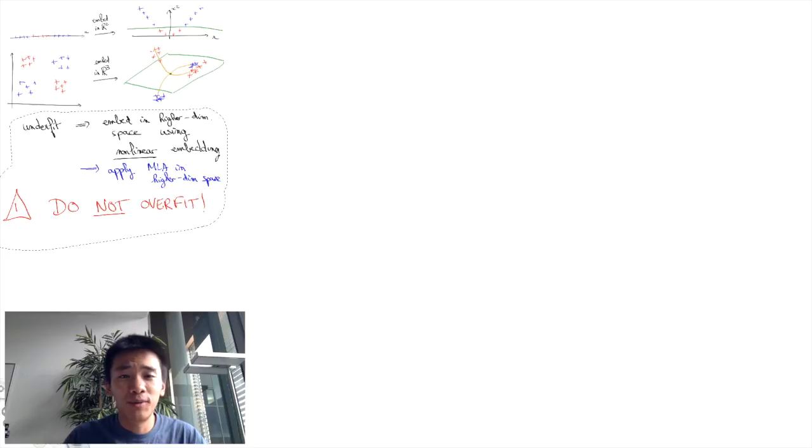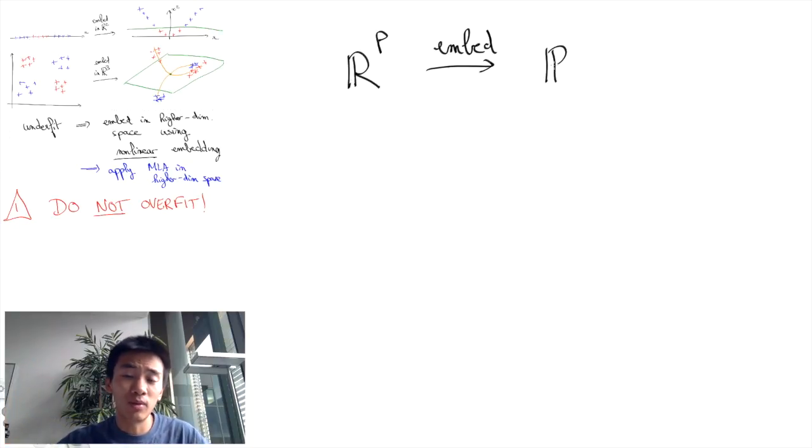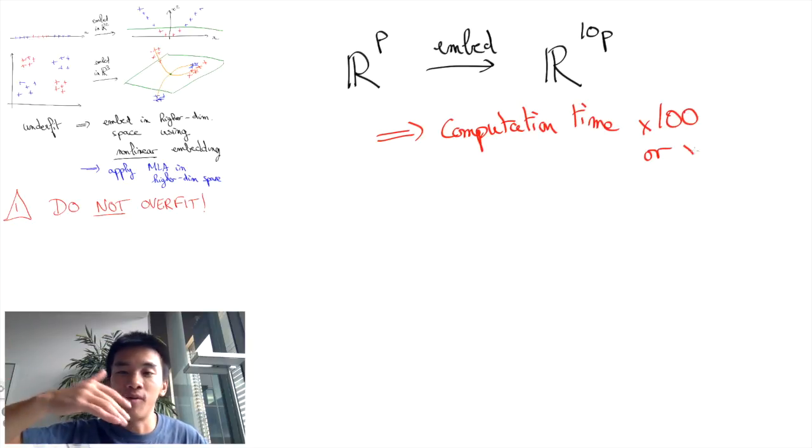Now this is all great, but if you just double, triple, or multiply by 10 the dimension of your feature space, then the computation time of your machine learning algorithms may explode a hundred or a thousand fold. And that's where the kernel trick really kicks in.